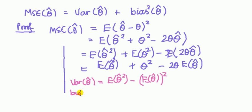Also we know, by definition again, that the bias of an estimator is equal to the expected value of the estimator minus the parameter theta.